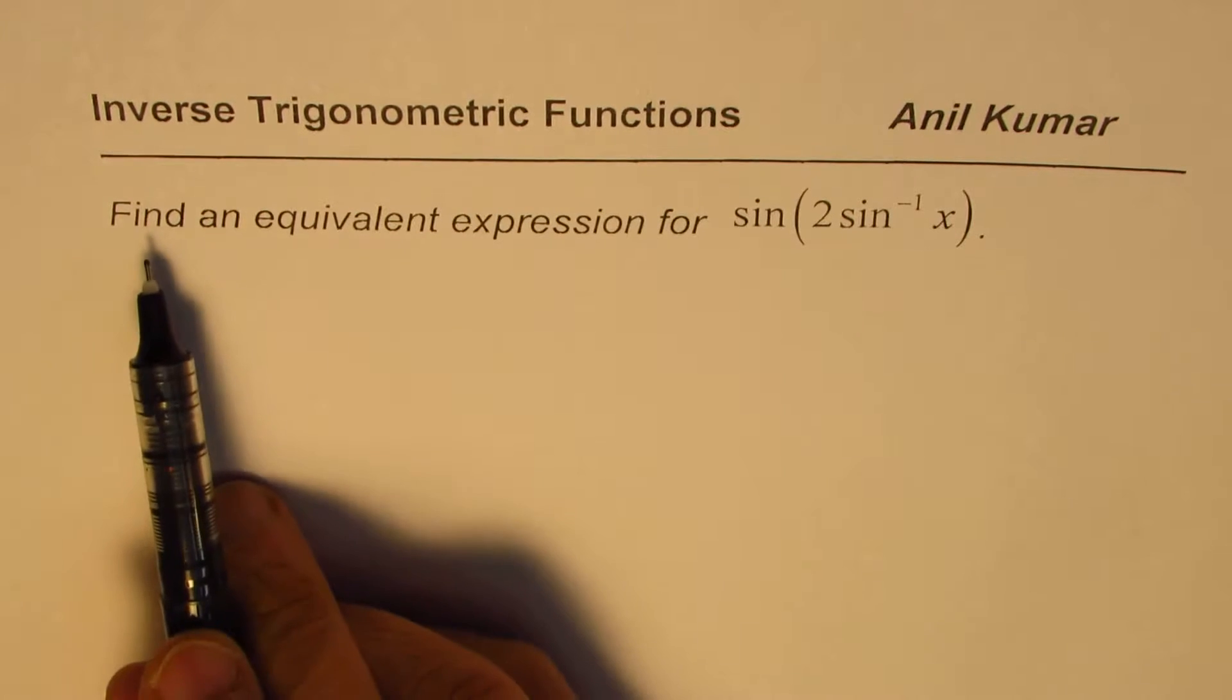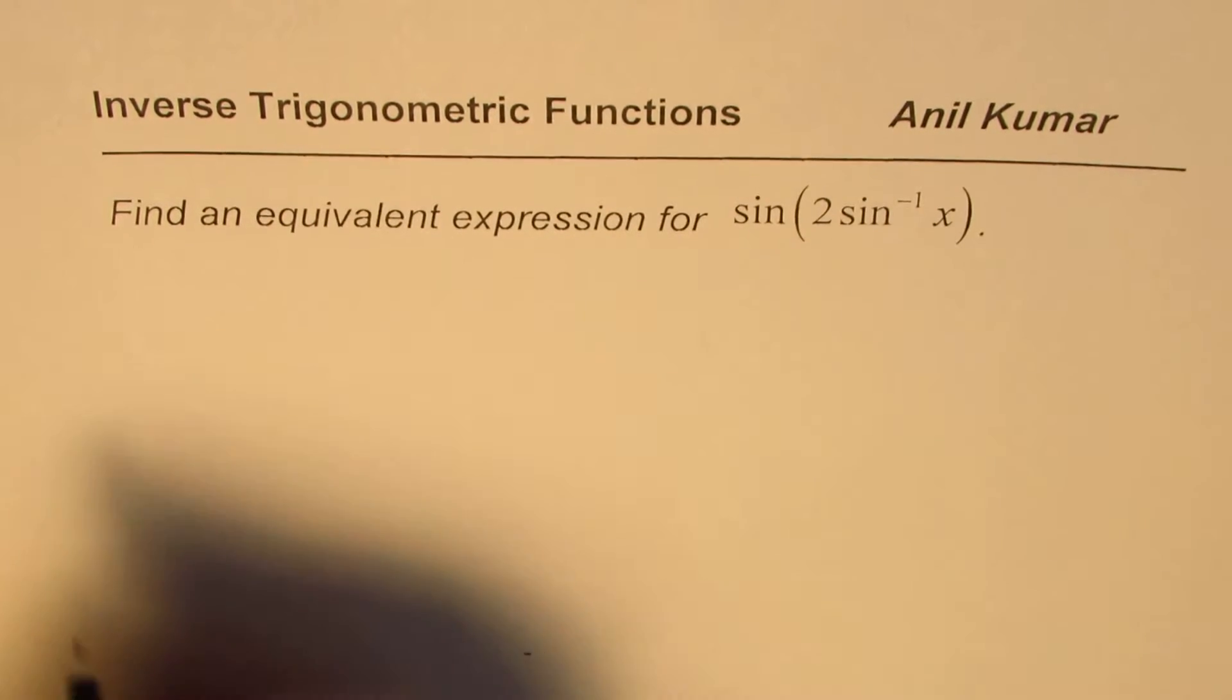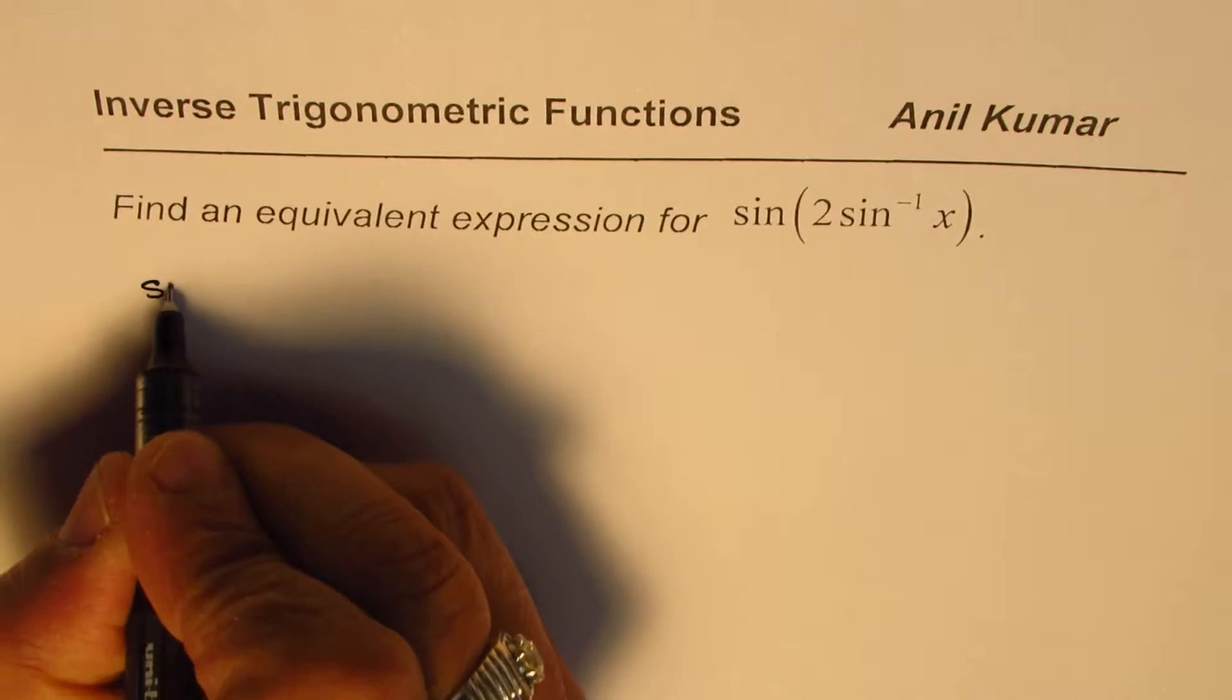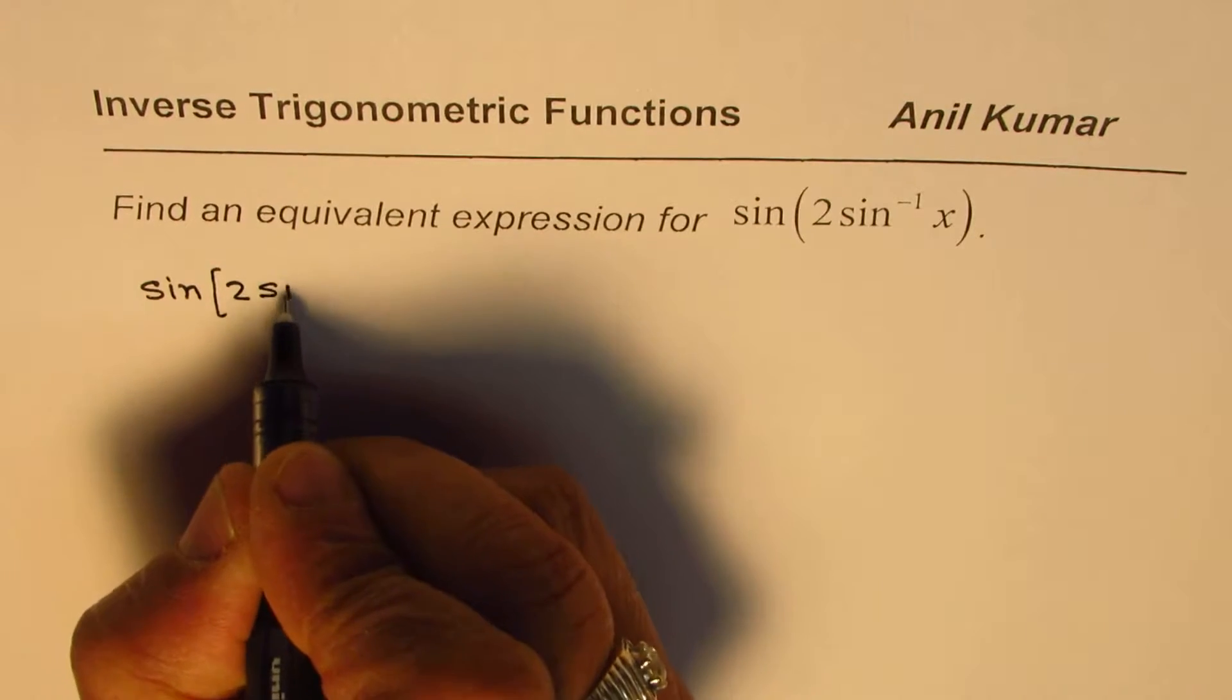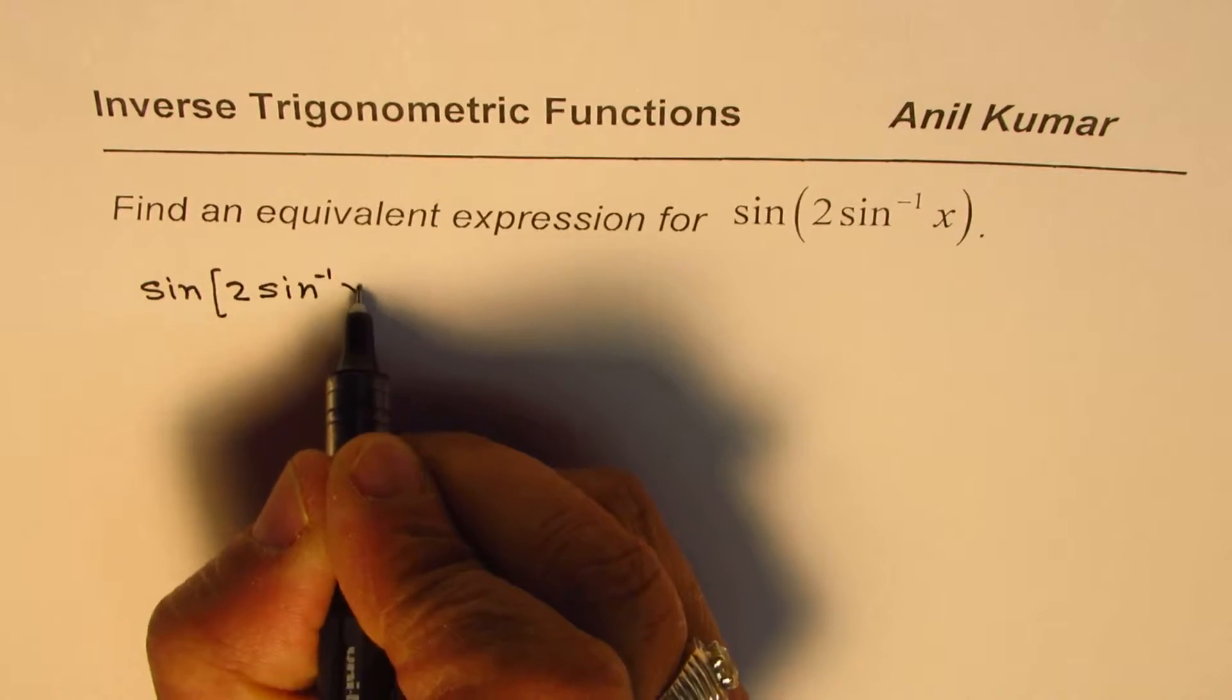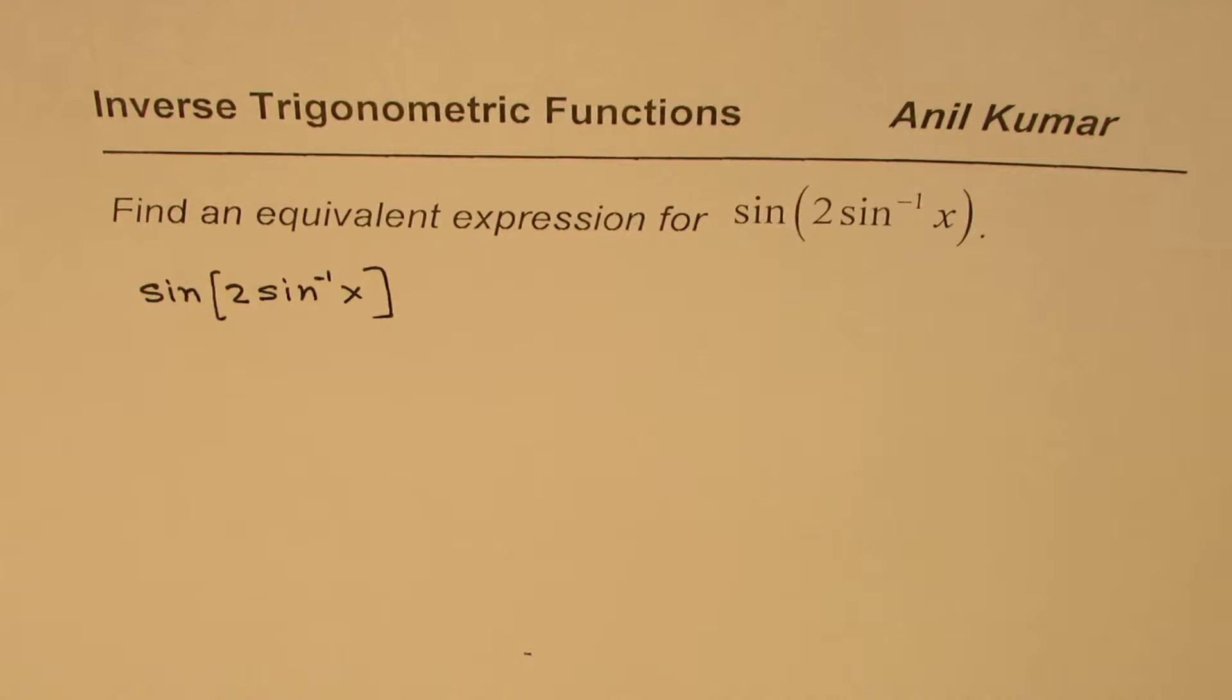So the question here is, find an equivalent expression for sin(2sin^(-1)x). Let me rewrite this. We are working on sine of 2, sine inverse of x. We need to find an equivalent expression for this. What does that mean?